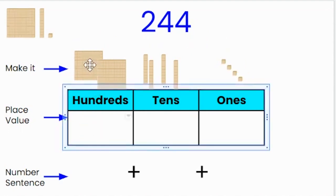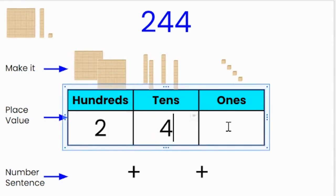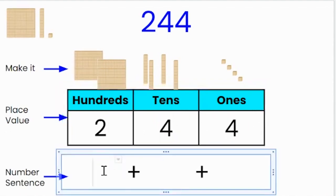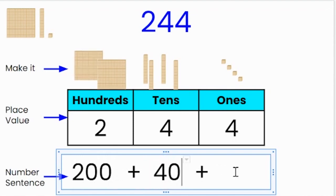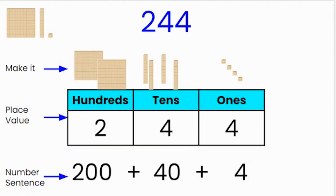In the place value chart I know that there are two hundreds, four tens, and of course four ones. When I write that as a number sentence, I know that two hundreds is two hundred, four tens is forty, and four ones is four. Two hundred plus forty plus four equals two hundred and forty-four.